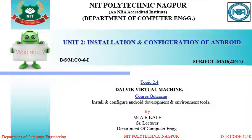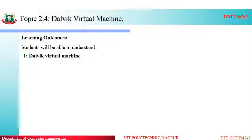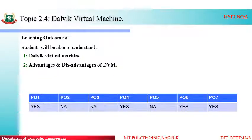The course outcome of this unit includes: install and configure Android development environment tools. The learning outcome of this video includes studying and introducing the functioning of the Dalvik Virtual Machine, along with its advantages and disadvantages. The POs mapped are PO1, PO4, PO6, and PO7.